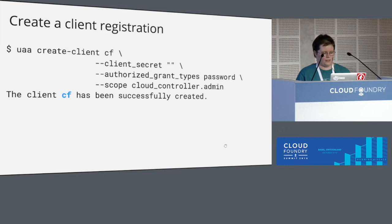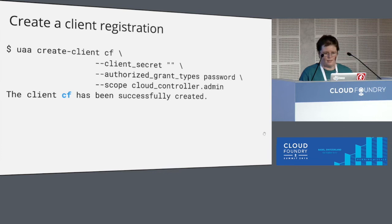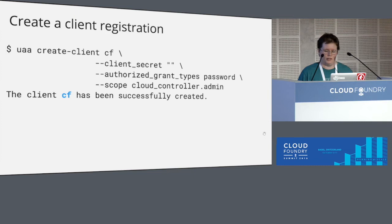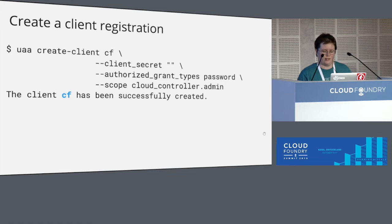Once you've done that, you can create a client like this. You provide the client ID — which is cf — and a client secret. In this case the client secret is an empty string, because with the CF CLI we want anyone to be able to download it and point it at any Cloud Foundry deployment, and the only way to accomplish that is to have a known constant value for the client secret. You have to tell the UAA what grant types are allowed to be used with this client, and finally what scopes does this client need. The real CF CLI requests a lot more scopes, but you start small and iterate — for this example I just put in cloud_controller.admin as a good starting place.